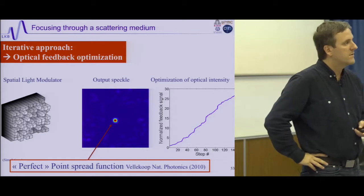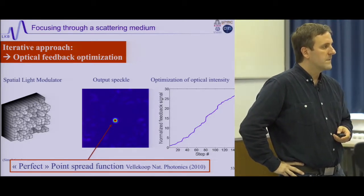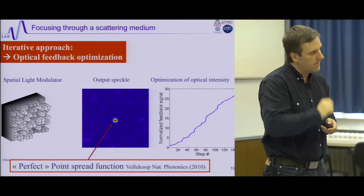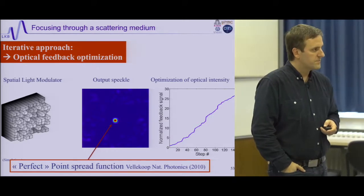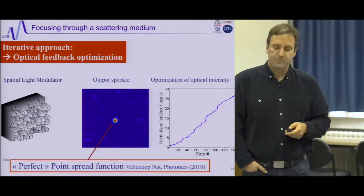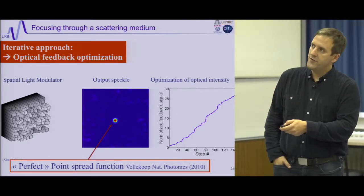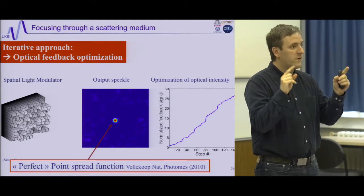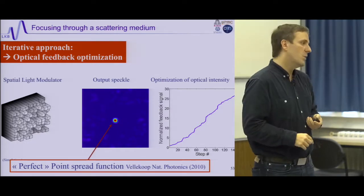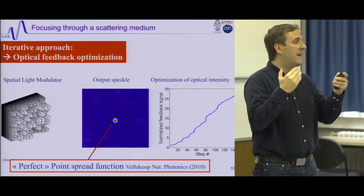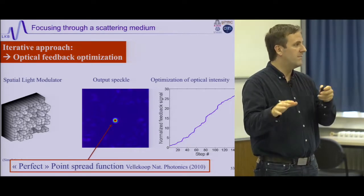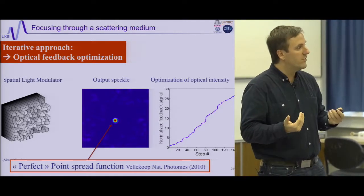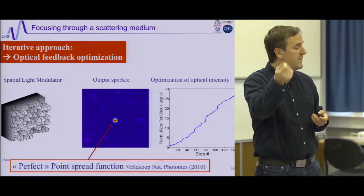Question: if you have two sources next to each other and optimize for one, how well do you do for the other? Answer: here I optimized the intensity at one detector. If I try to optimize the total intensity of two points simultaneously, I will get two foci, but each with half the intensity. The SLM pixels are shared between the two target points. If I try to focus on many points, it works but with reduced efficiency depending on the number of target points.